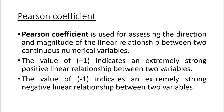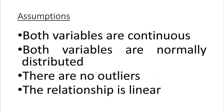Pearson coefficient is used for assessing the direction and magnitude of the linear relationship between two continuous numerical variables. Its maximum value is positive 1, indicating an extremely strong positive linear relationship. The minimum value is negative 1, which indicates an extremely strong negative linear relationship. In order to calculate Pearson coefficient, you need to ensure the following assumptions are fulfilled: both variables must be continuous, both should be normally distributed, there should be no outliers, and the relationship should be linear.